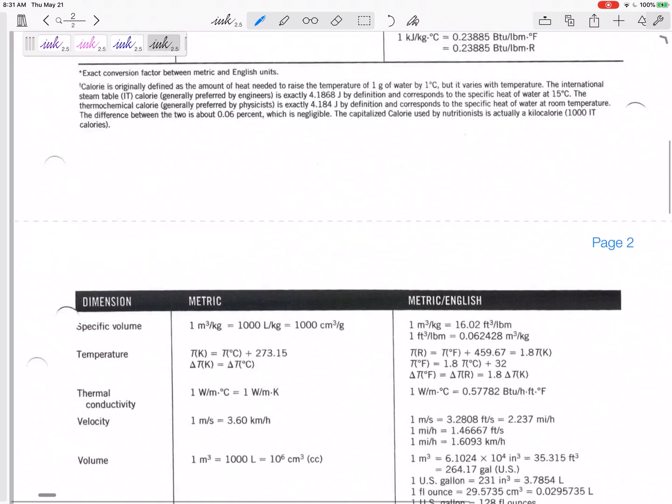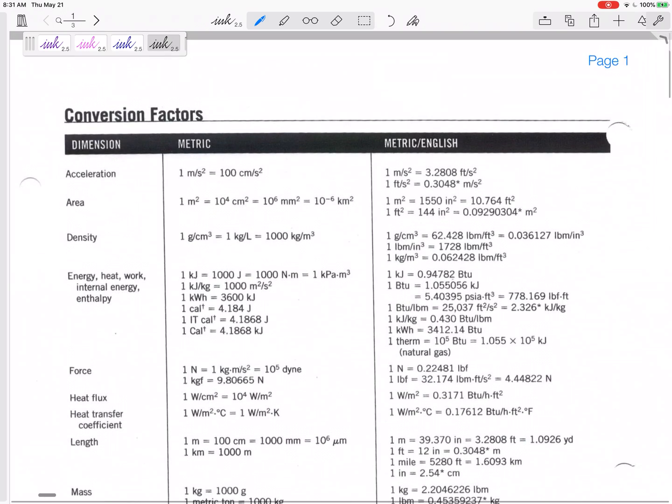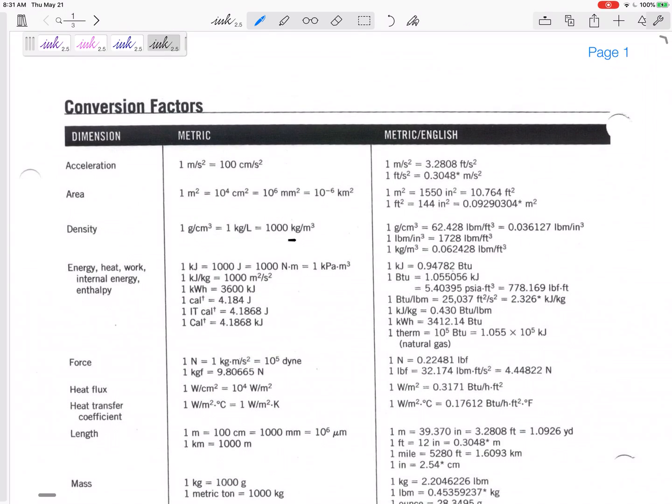Then one other thing we're about to do in a problem. This right here, 1,000 kilograms per meter cubed, that is the density of water. That is the density of water. And this is the density of water as well, not the rest of these. So if you go to density, density is 1,000 kilograms per meter cubed.